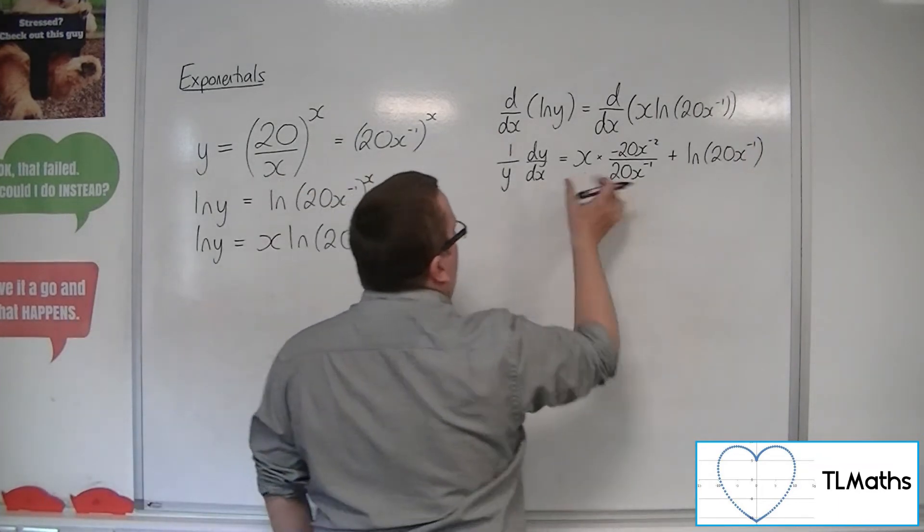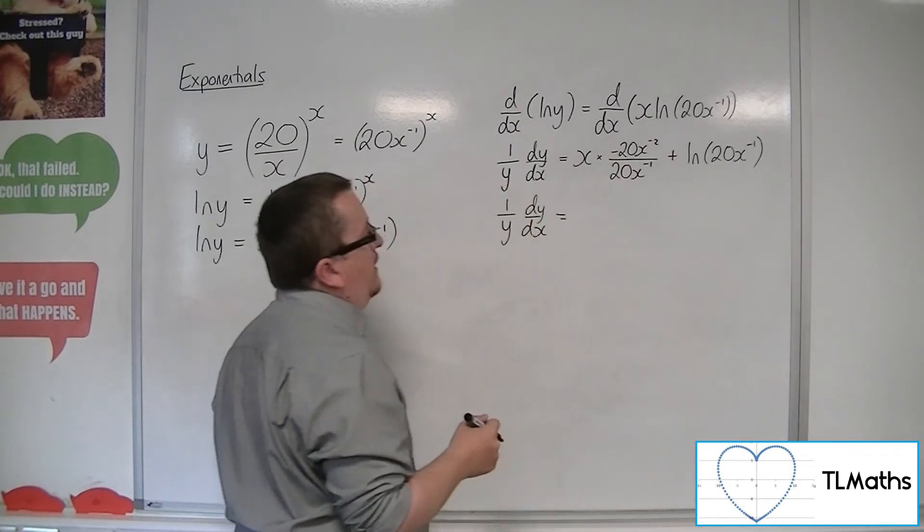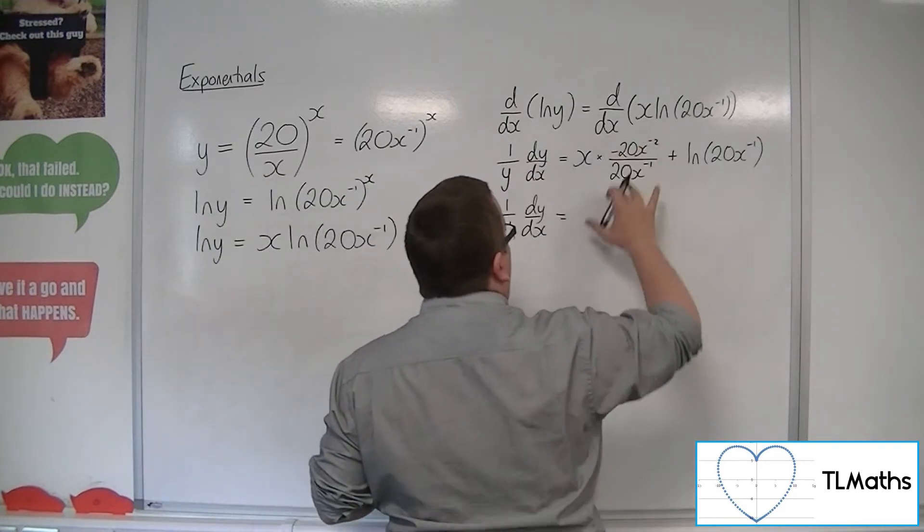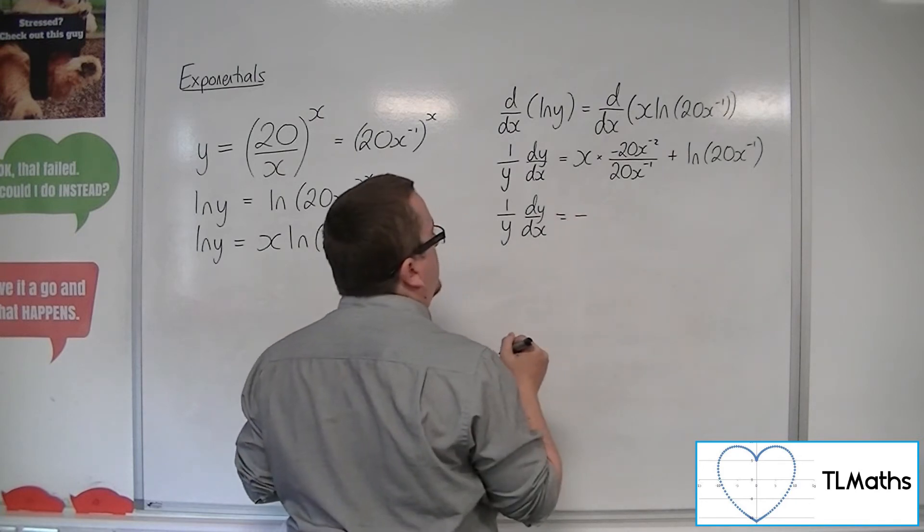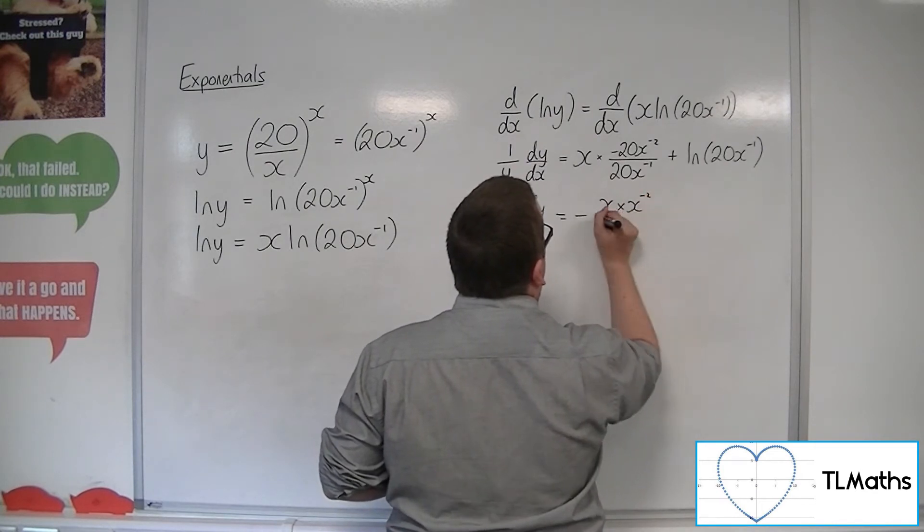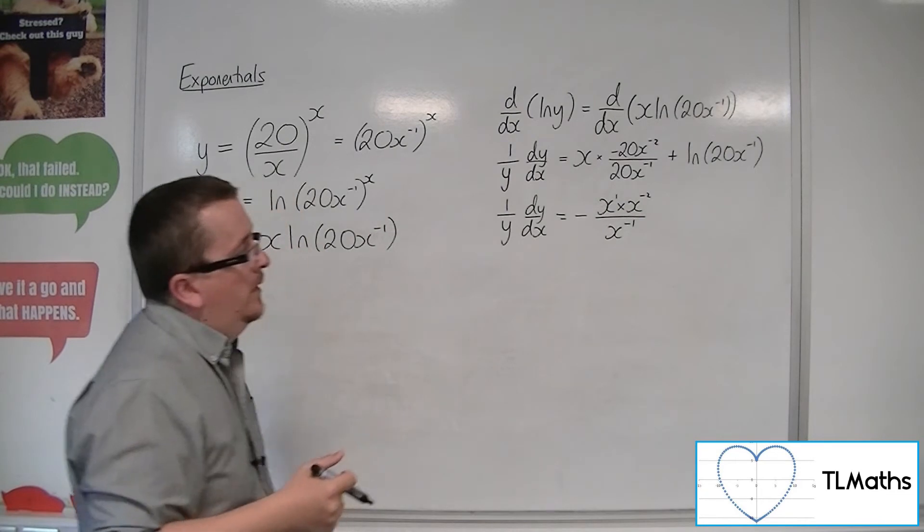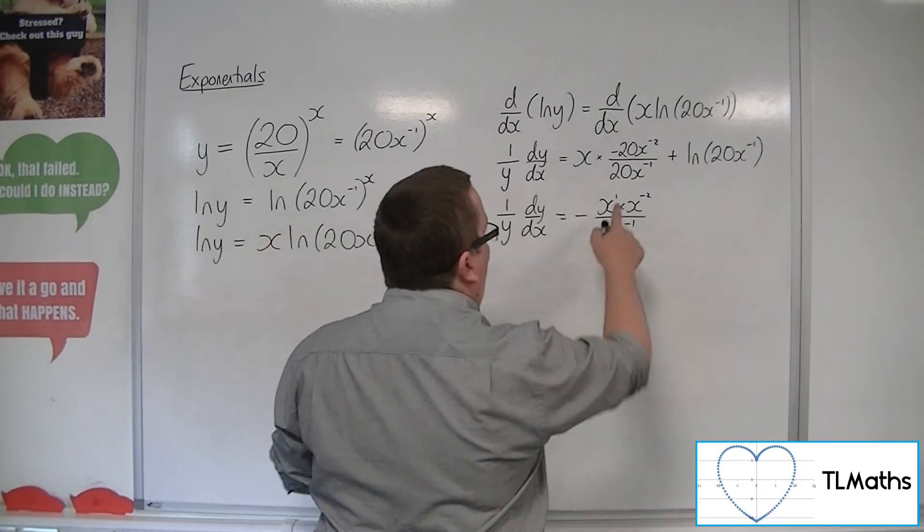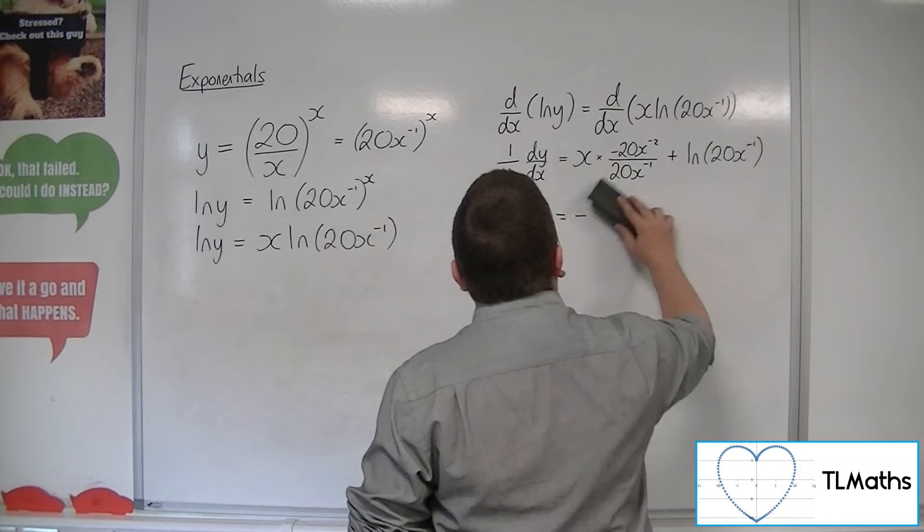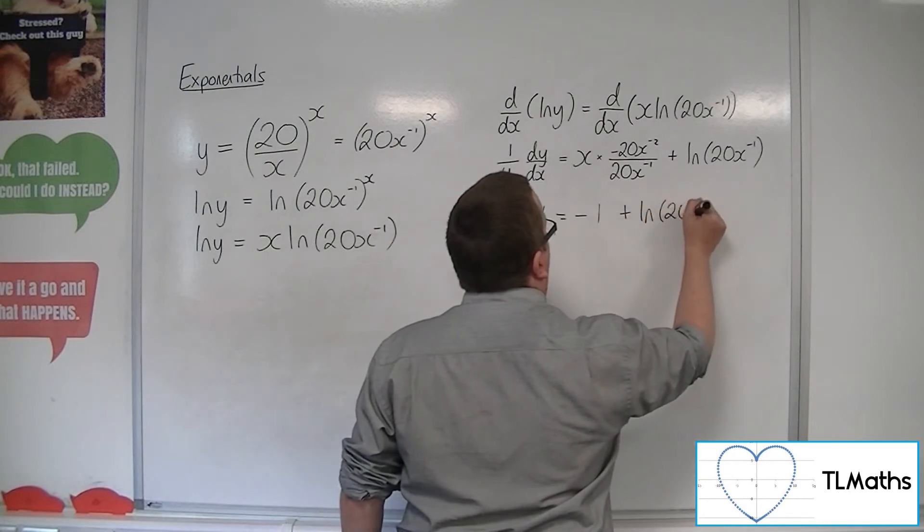So we need to simplify this bit. So what have we got? We've got x times minus 20x to the minus 2 over 20x to the minus 1. So the 20s will cancel. I can bring the minus sign out to the front. So then we've got x times x to the minus 2. So that's x to the 1 times x to the minus 2, will be just x to the minus 1. So we've got x to the minus 1 in the numerator, x to the minus 1 in the denominator, and so we've just got minus 1. So that fraction simplifies to minus 1. And we've got this plus ln of 20x to the minus 1.